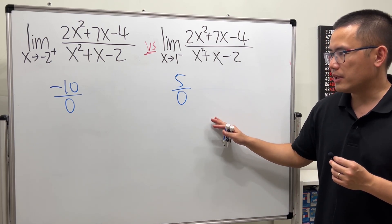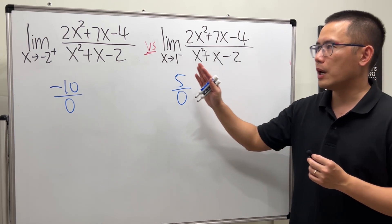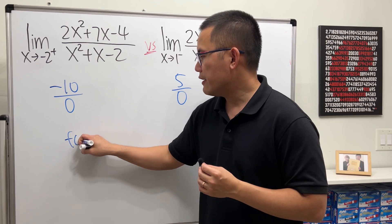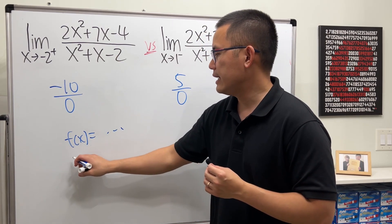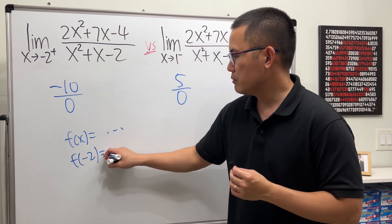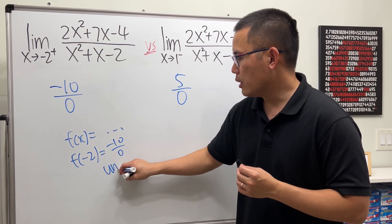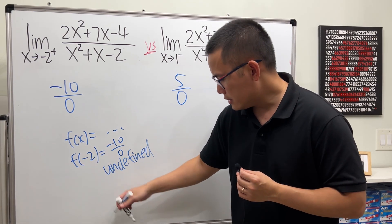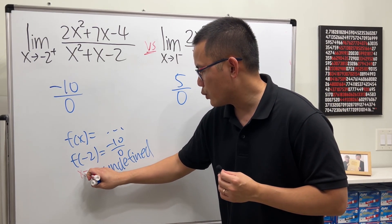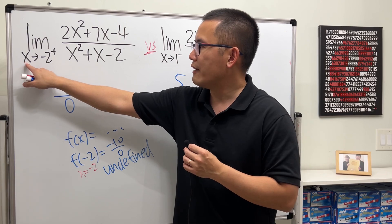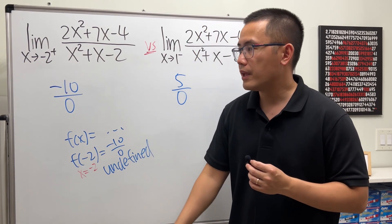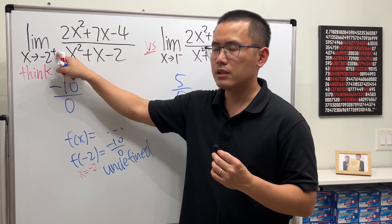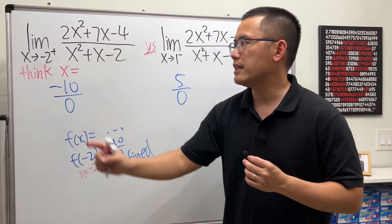Make sure you don't just stop here and say they are undefined, because we are talking about limits — not regular computation. If the question asks you what f of negative 2 is, then once you see negative 10 over 0 it will be undefined. But here, when we have x approaching negative 2 from the positive direction, x is just a number that's a little bit bigger than negative 2.